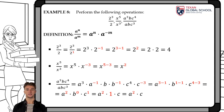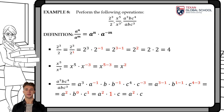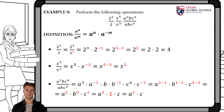Finally, a cubed b c to the fourth over a b c cubed. To simplify, we apply this law and raise the bases of the divisor with the opposite sign, thus obtaining a cubed times a to the negative 1, times b times b to the negative 1, times c to the 4th times c to the negative 3. Performing the difference of the exponents, we obtain a squared times b raised to 0 times c to 1. Then, applying previous laws, we get a result of a squared times c.